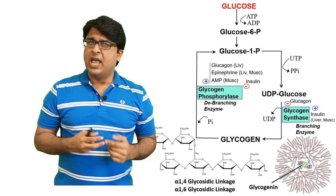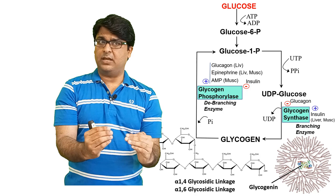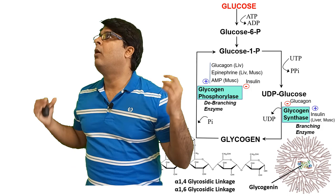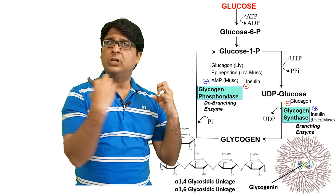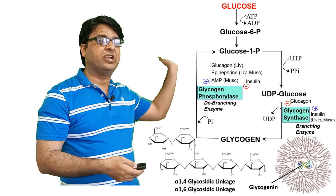AMP also induces glycogen phosphorylase in muscles. In muscles, whenever there is lack of ATP, this is designated by high levels of AMP. The muscle says: I have a lot of AMP available but no ATP — adenosine monophosphates are there but no adenosine triphosphate. So AMP induces glycogen phosphorylase, glycogen is broken down into glucose 1-phosphate to generate more energy.